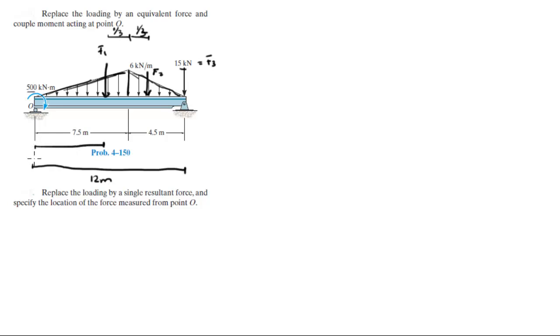You know that the distance from 0 to F1 and the distance from 0 to F2... The distance from 0 to F1 is 7.5 minus one third of 7.5, so it comes out to be 5 meters.